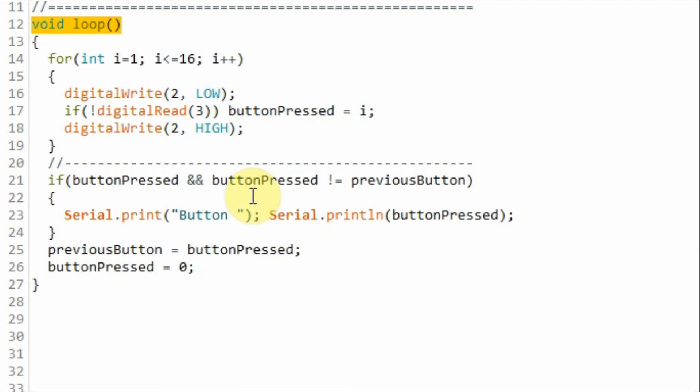A quick look at the C++ code. Inside the loop function, we need to use a for loop that will loop 16 times so that we can generate 16 clock pulses. Inside the for loop, we need to send the low pulse through the serial clock line to enable the serial data output line.